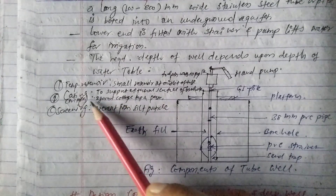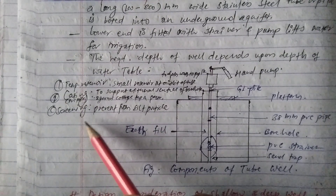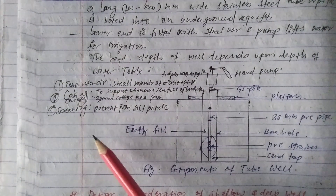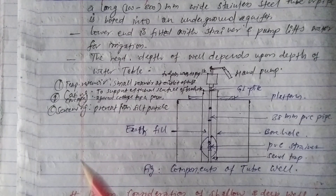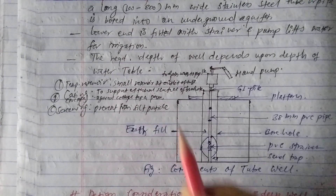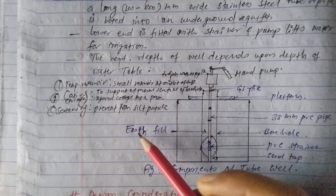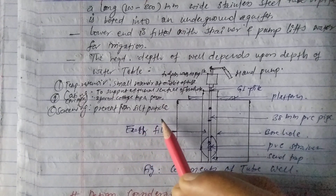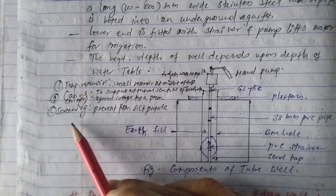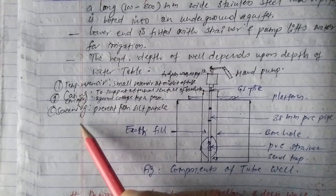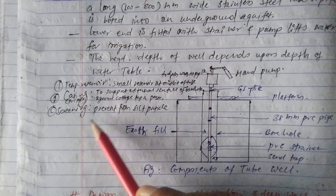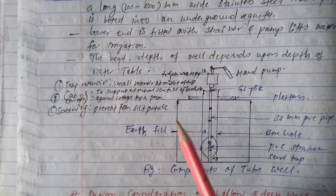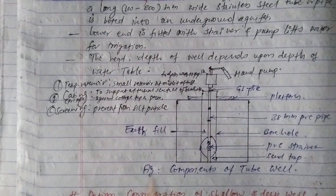Third is screening. Screening is provided for the purpose of preventing shield particles from entering. When shield particles are present, we have to prevent them, and that is why we use screening. The main purpose of screening is to prevent shield particles from entering the tubule.